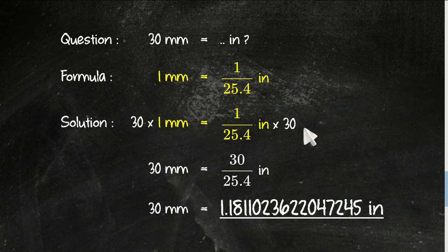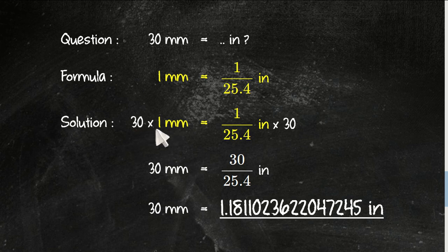Now we have 30 times 1 equals 30, so 30 millimeters, and 30 times 1 over 25.4.